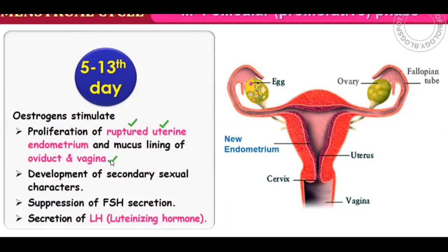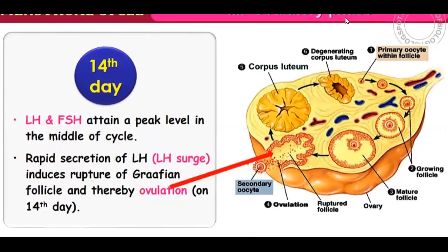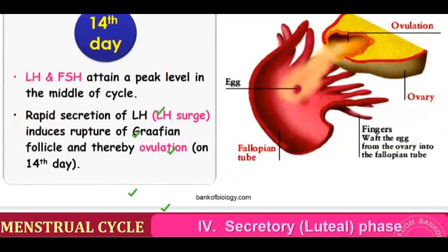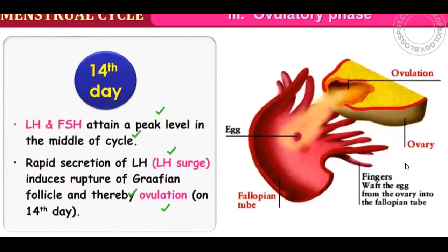Estrogens cause proliferation of the ruptured uterine endometrium, mucus lining of the oviduct and vagina — healing the uterine layer after menstruation. Estrogens also stimulate the pituitary gland and promote development of secondary sexual characters such as enlargement of the breast and hip region. When LH gets increased — LH surge — ovulation occurs on day 14. LH and FSH attain a peak level in the middle of the cycle, and this LH surge triggers ovulation.